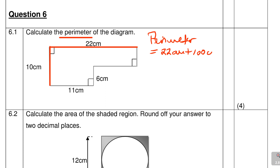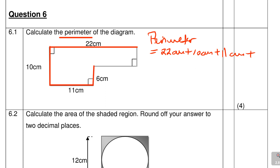Continuing around the shape: plus 10 centimeters — sorry, I initially said 100, it is 10 centimeters. Then plus 11 centimeters, and then plus 6 centimeters, continuing the distance right around the shape.